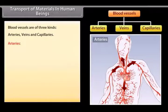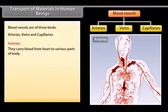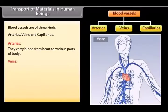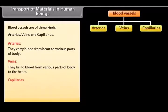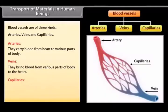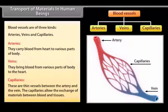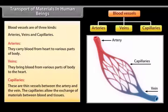Arteries carry blood from the heart to various parts of the body. Veins bring blood from various parts of the body to the heart. Capillaries are thin vessels between the artery and the vein. The capillaries allow the exchange of materials between blood and tissues.